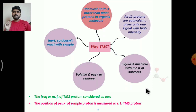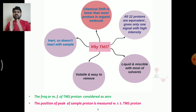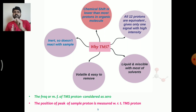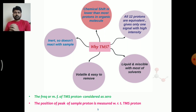Why is TMS used as a standard? The chemical shift of TMS is lower than that of most protons present in any organic molecule. TMS has 12 protons, all equivalent, giving only one signal with very high intensity — a single peak at the lower side. TMS is a liquid, miscible with most organic solvents, volatile so the sample can be recovered, and inert so it doesn't react with organic molecules.